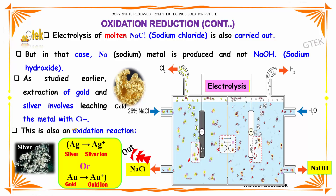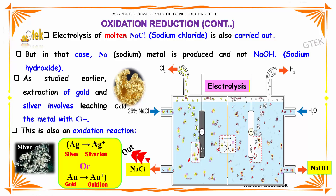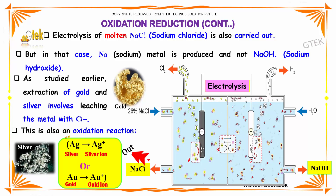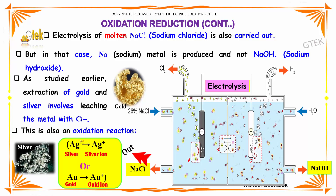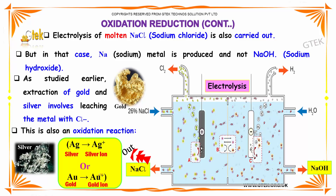As studied earlier, extraction of gold and silver involves leaching the metal with chlorine. This is also an oxidation reaction where silver converts into silver ion and gold converts into gold ion.